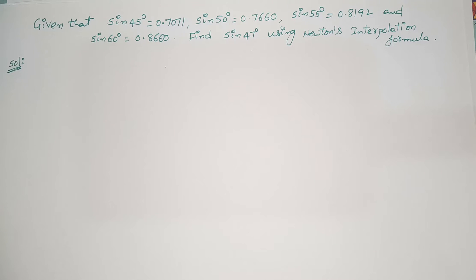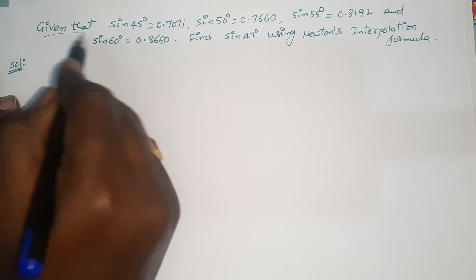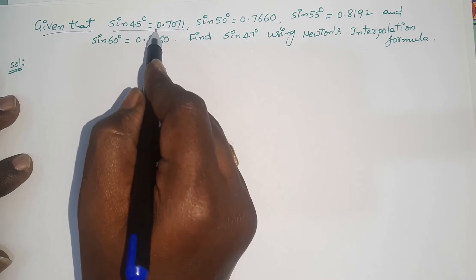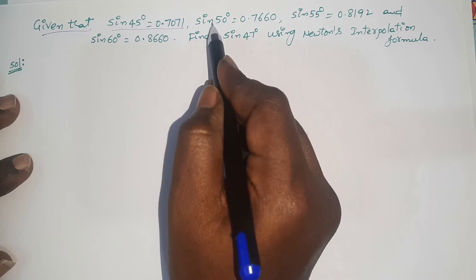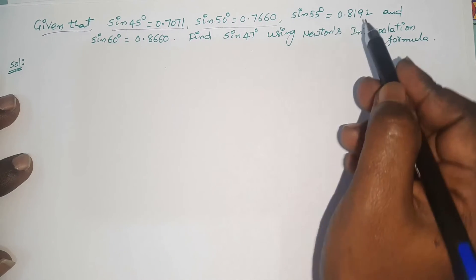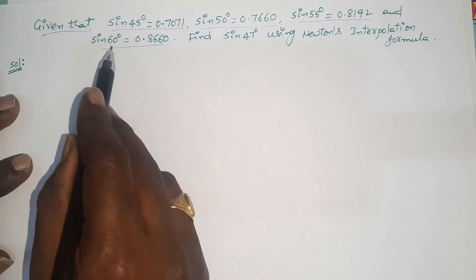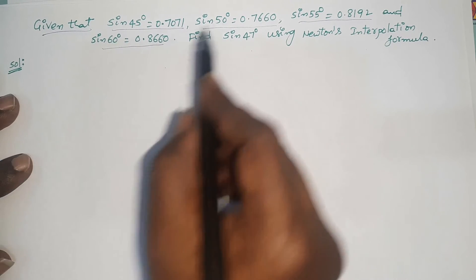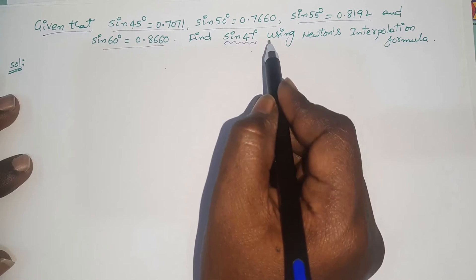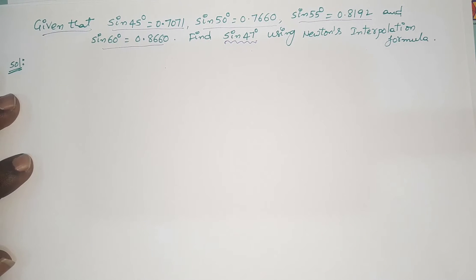Hi everyone, welcome back to our channel. In this video I will give another example on interpolation. The given problem: sin 45° = 0.7071, sin 50°, sin 55°, and sin 60° values are given. You should find out sin 47° using Newton's interpolation formula.